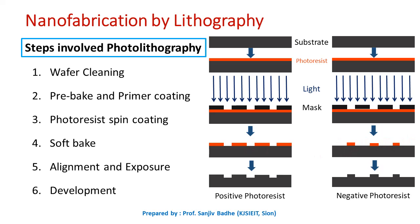After development, the semiconductor wafer is hard baked at high temperature to solidify the remaining photoresist. This remaining photoresist can be used as a patterning mask for etching, deposition, or implantation. After patterning, the photoresist material is stripped off from the wafer with appropriate solvents. This is how the pattern is imprinted with the help of photolithography technique.